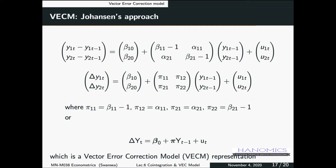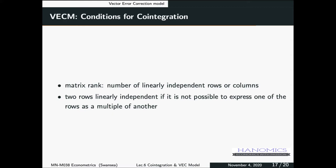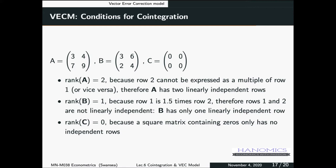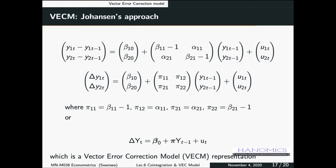Let's quickly explain what that means. The rank of any matrix is the number of linearly independent rows or columns. Looking at these three matrices: matrix A has rank 2 because row 2 cannot be expressed as a multiple of row 1, or vice versa — we have two linearly independent rows. Matrix B is of rank 1 because row 1 is 1.5 times row 2 — multiplying by 1.5 gives you the first row. So that matrix is rank 1. Matrix C is rank 0.